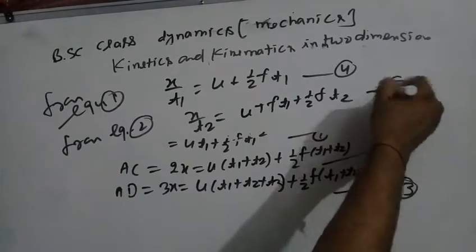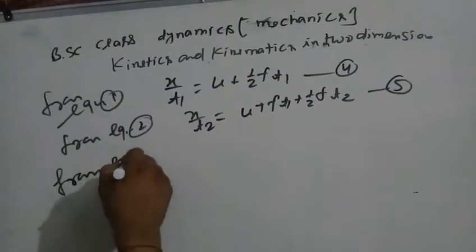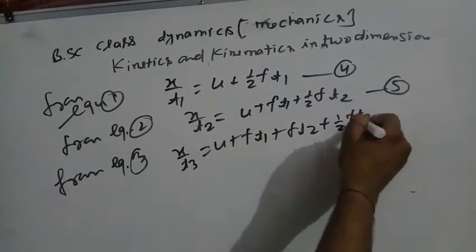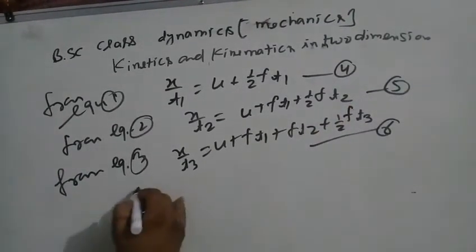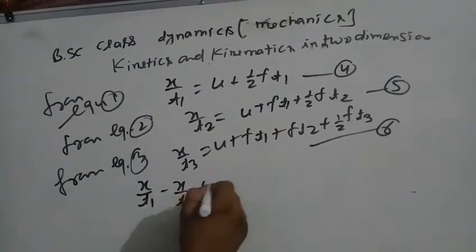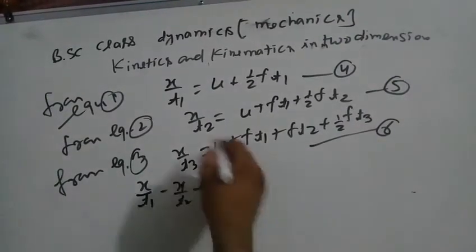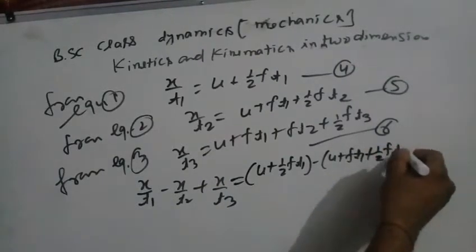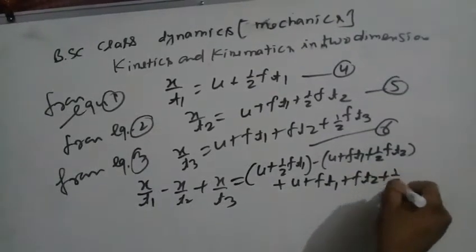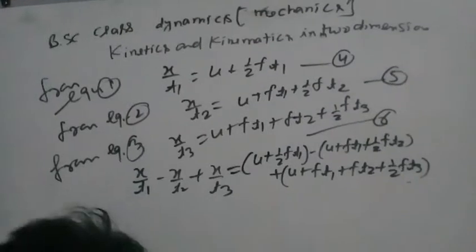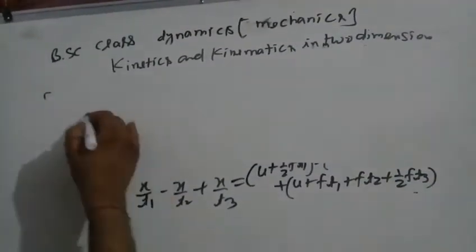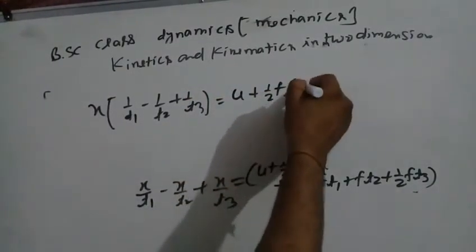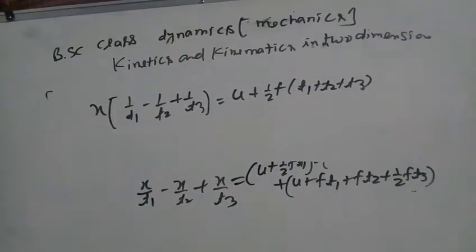From equations 4, 5, and 6, subtracting and adding: x/t1 - x/t2 + x/t3. The linear correlation gives: x(1/t1 - 1/t2 + 1/t3) = u + ½f(t1 + t2 + t3), equation number 3.